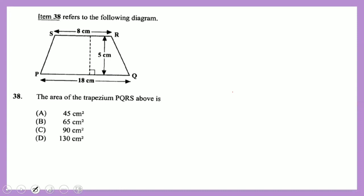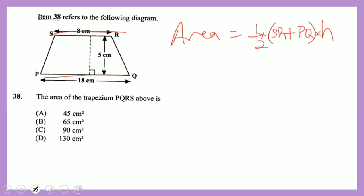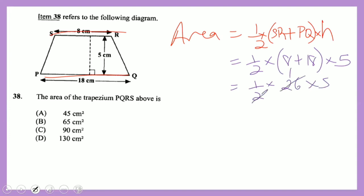Question 38: area of a trapezium. The formula is half times the sum of the two parallel sides times the height. The parallel sides are SR and PQ. That gives ½ × (8 + 18) × 5. Eight plus 18 is 26, divided by 2 is 13, times 5 equals 65 square centimeters.